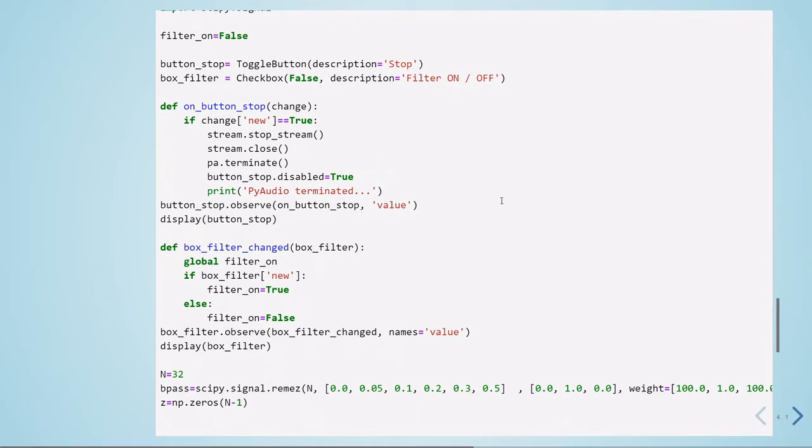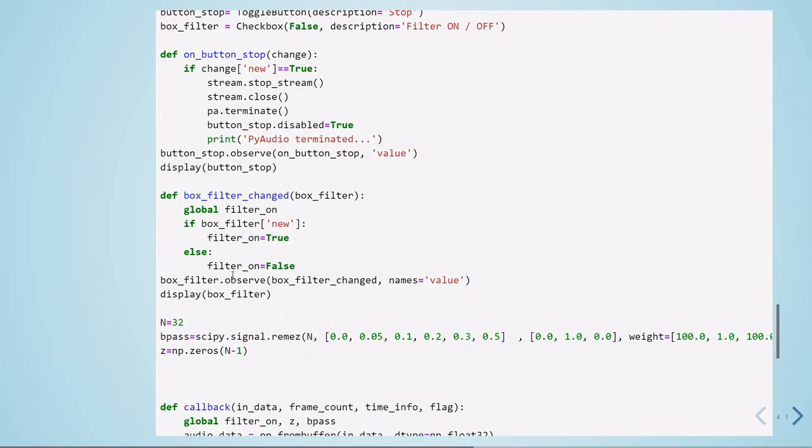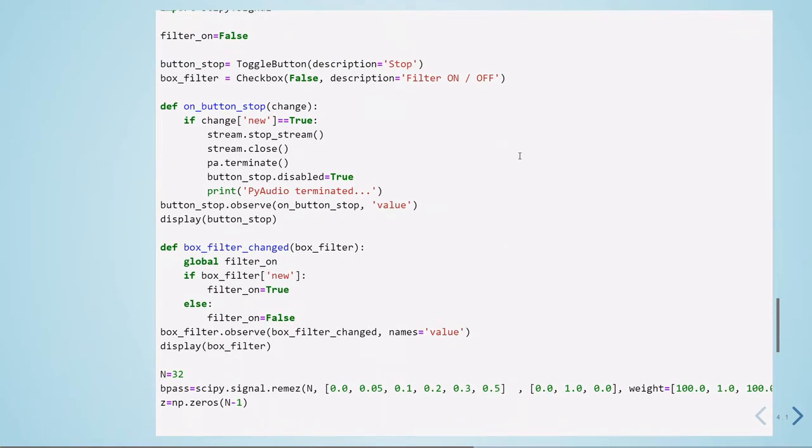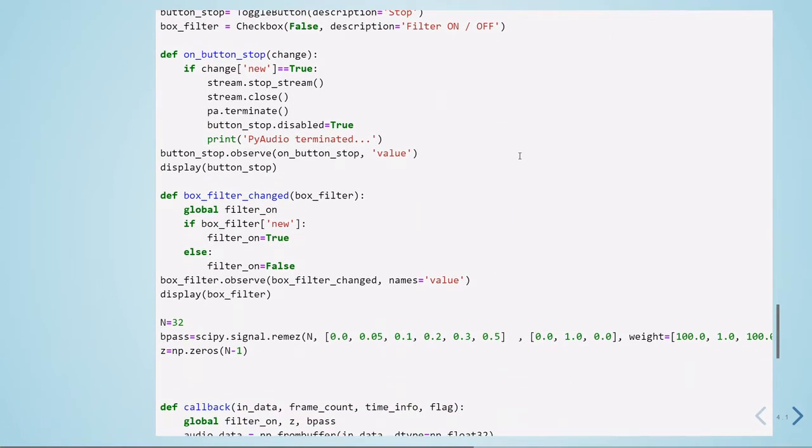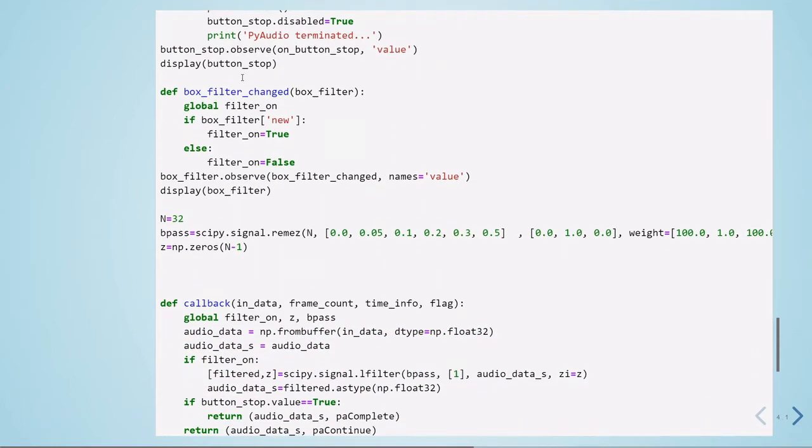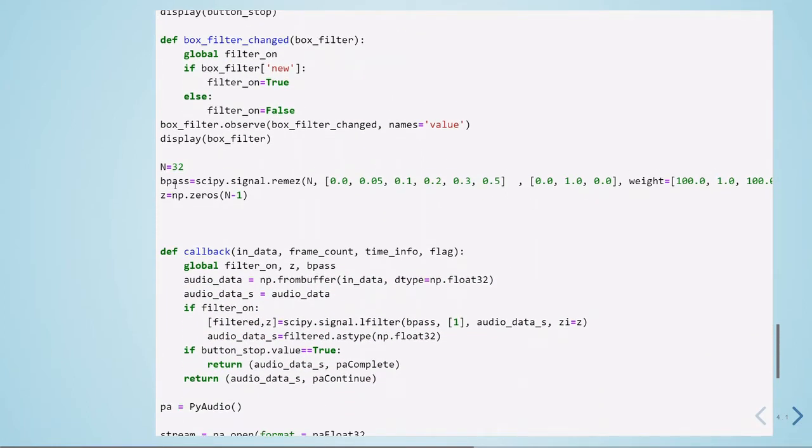When we click the checkbox to turn the filter on and off, we will just turn the filter variable to true or false. Here we are displaying the boxes, and here we are defining our filter exactly like what we did before.